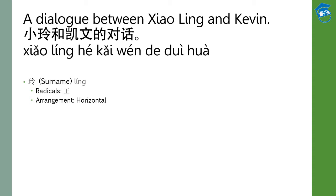林 is a surname, but it is often used in Chinese girls' names. In this text, it is more likely that Xiaolin is her name or nickname, rather than 小 plus the family name. The pinyin is 林, and the radical is the component on the left. The arrangement is horizontal because you have left and right components.